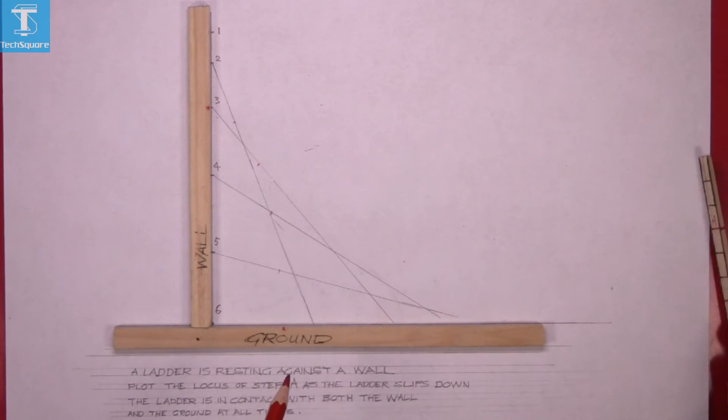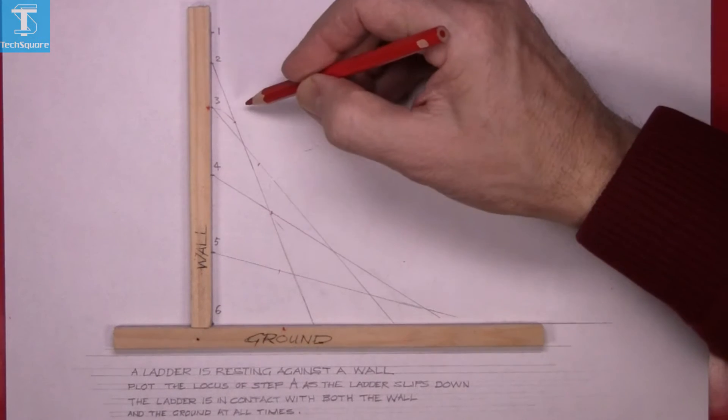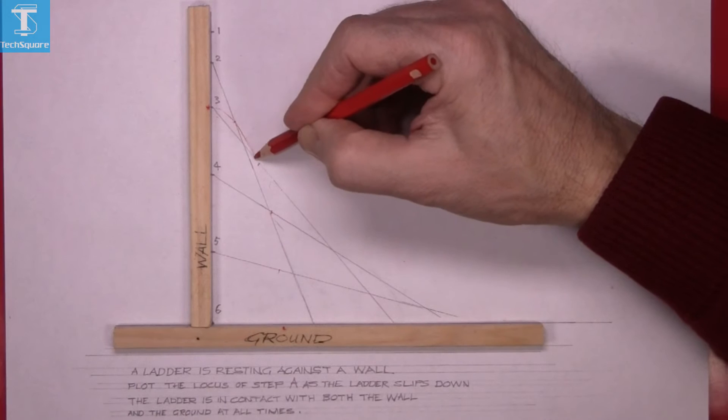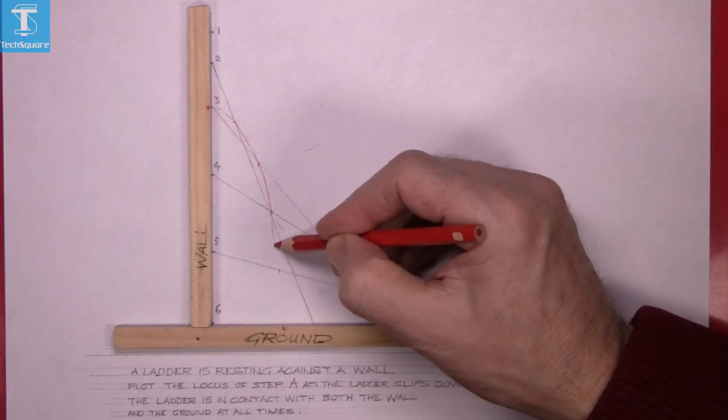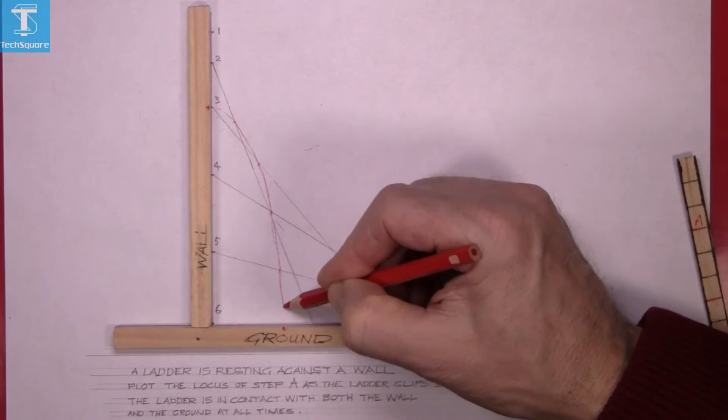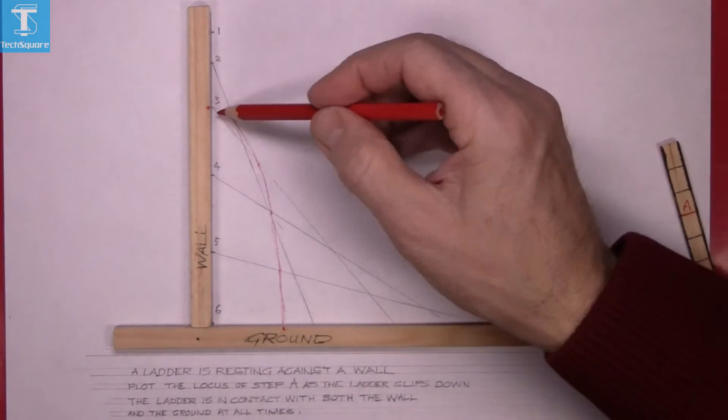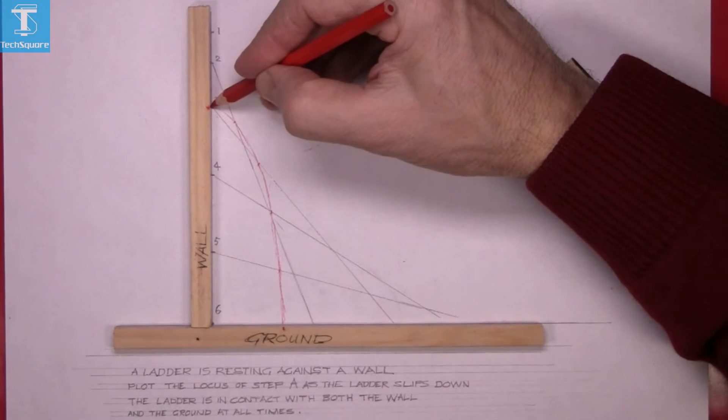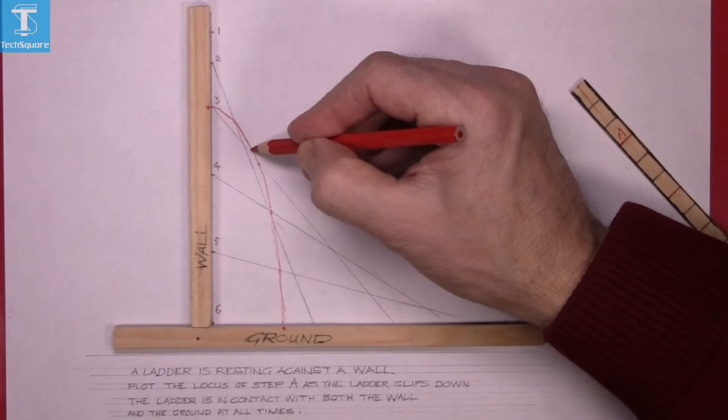So now, these are the points for the locus of the step as the ladder slides out in the bottom. So you just freehand join the points and that is the locus of step A as the ladder slips down, just using the templates.